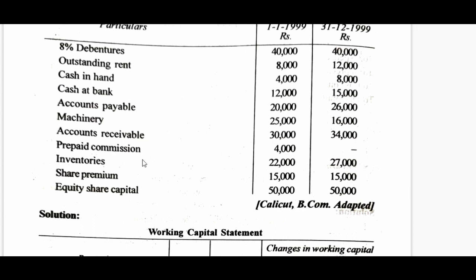Now let us discuss the formulas that will help you understand how the data are recorded in the schedule of changes in working capital. When there is an increase in current asset, obviously you find an increase in working capital. For example, if the value of stock, compared to the previous year, increases in the current year, the working capital for the current year will increase. The same rule is applicable for all current assets. Formula 1: increase in current asset leads to increase in working capital. Formula 2: decrease in current asset leads to decrease in working capital.